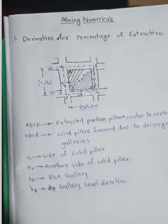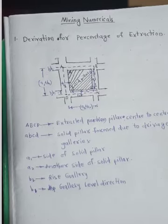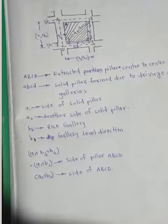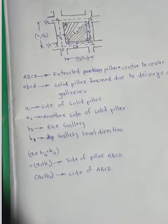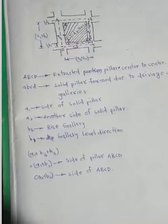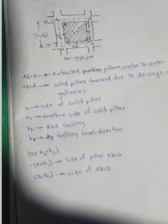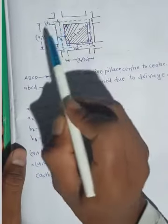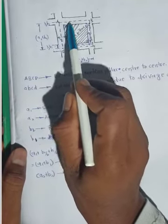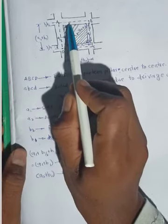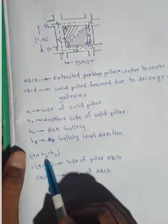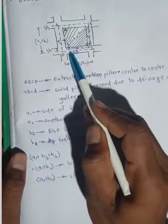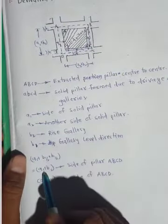The side of the solid pillar is a1, and a2. b2 is the rise gallery and b1 is the gallery in the level direction. a1 plus b1 is the side of the pillar ABCD. The gallery in the rise direction is b1, and the pillar at the middle of the gallery gives half of b1, represented as b1 by 2. So the full side is a1 plus b1.